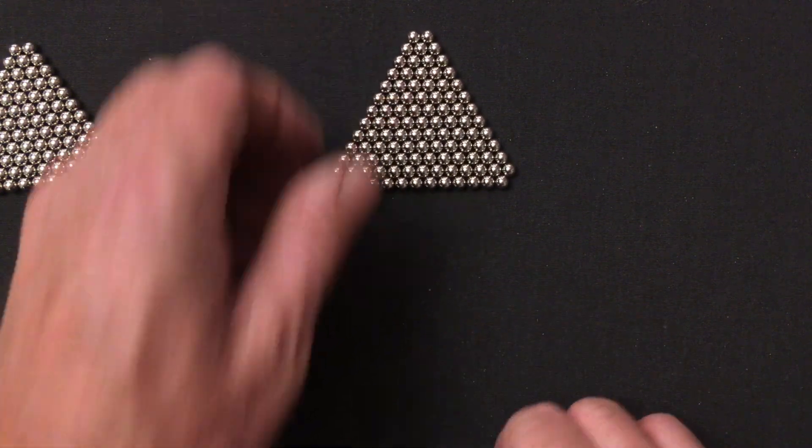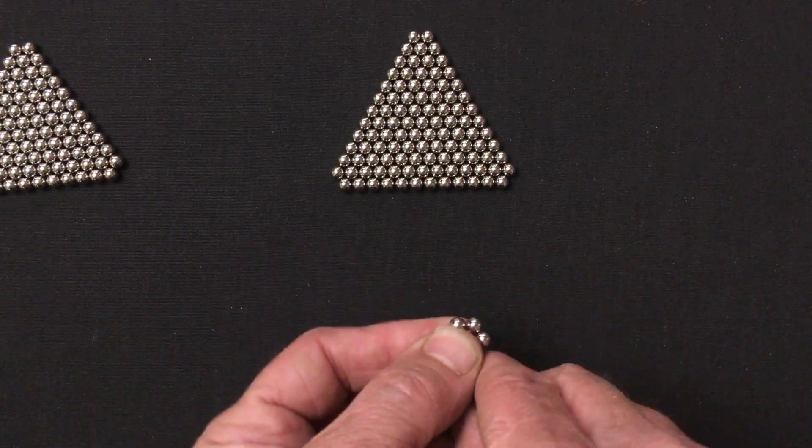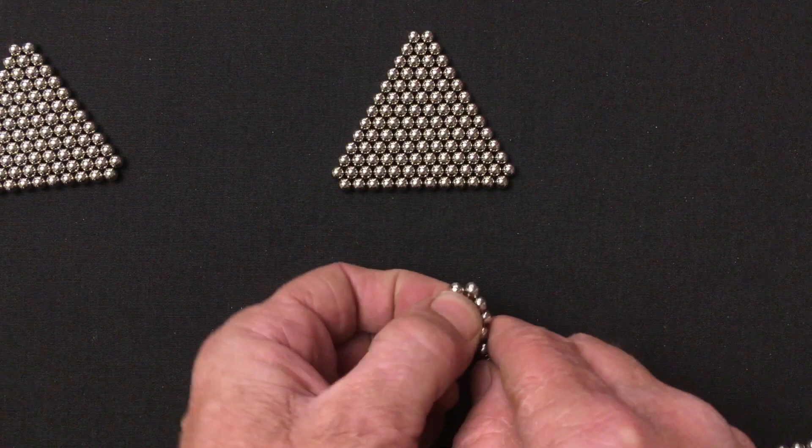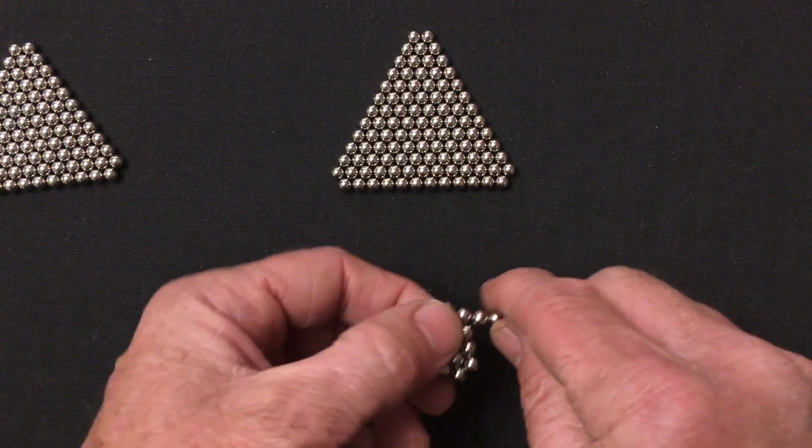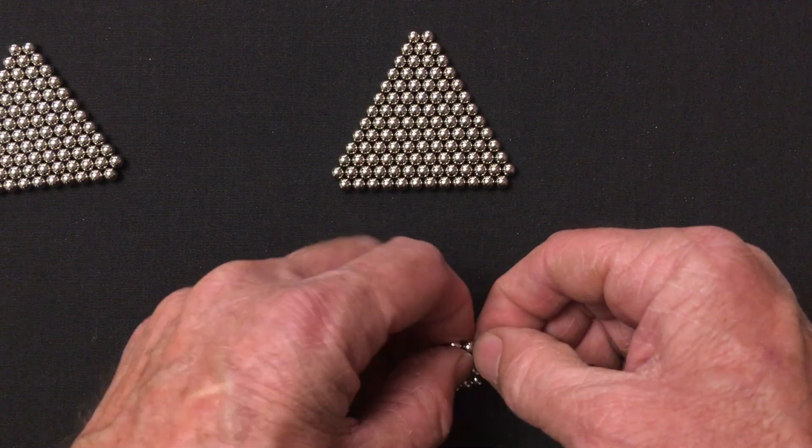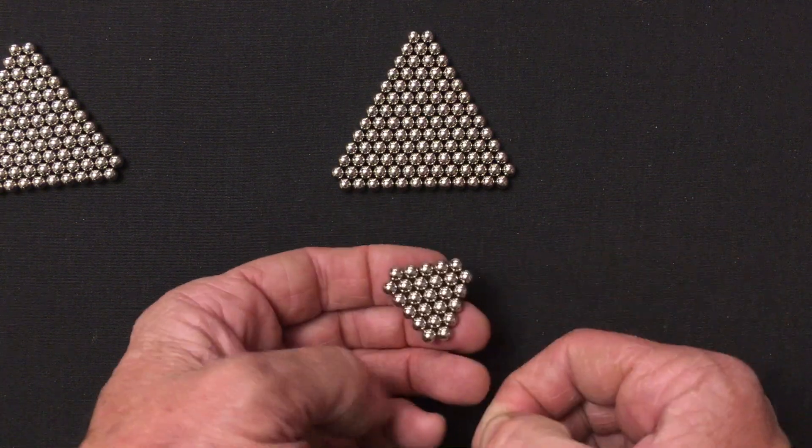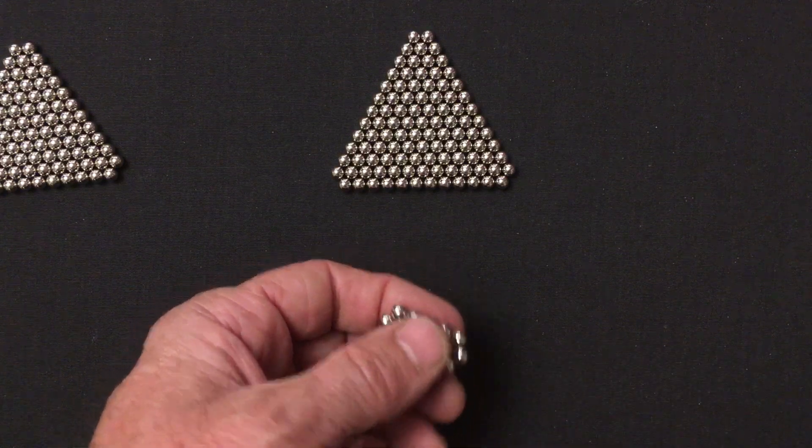And then we also need a 2 by 5. That's layer 3. Starts off with the filled hexagon. Put another ring. Add two magnets to alternating sides. And there's a 2 by 5. Happy day.